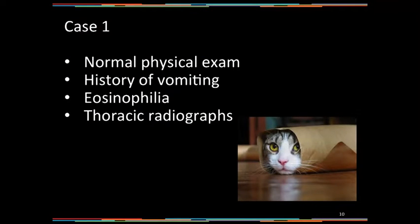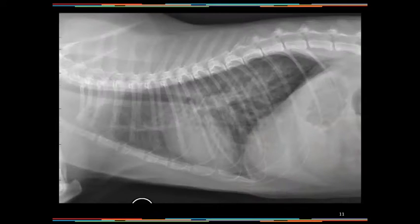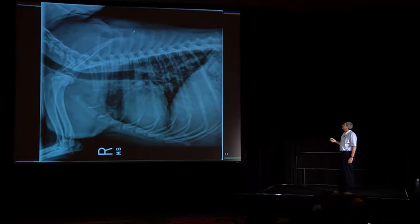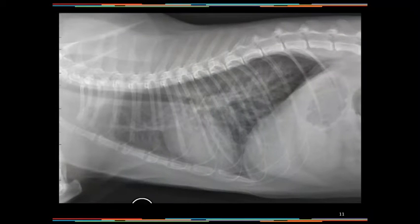Case number one: normal physical exam, routine workup, normal bloodwork, and we take thoracic radiographs. On the radiographs we can see some big vessels — right here is enlargement and tortuosity of a pulmonary artery. How do I know it's a pulmonary artery? I don't, because on the caudodorsal view you can't tell artery versus vein. But I'm highly suspicious because veins don't do this.